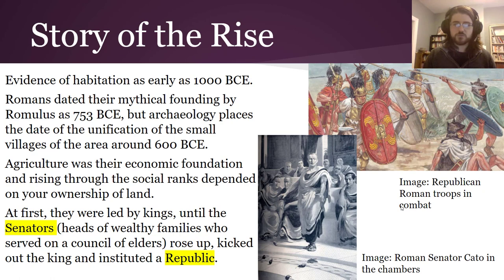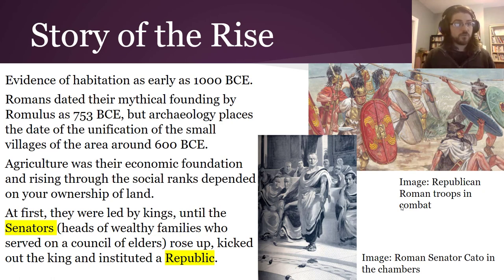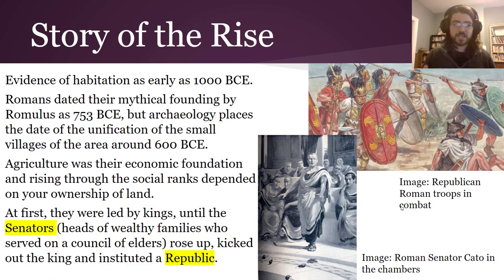Because their land was so fertile and Rome had an independent mindset from early on, individual Roman citizens owned their own land — the basis of their economy. If you were a citizen, ideally you owned land, could support yourself, support the state, and participate in wars. At first they were led by kings, but the kings made unpleasant decisions, and the senators — heads of wealthy families forming a council of elders — rose up, got rid of the last king, and established a republic.